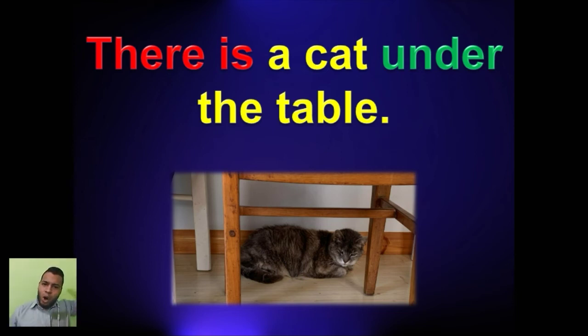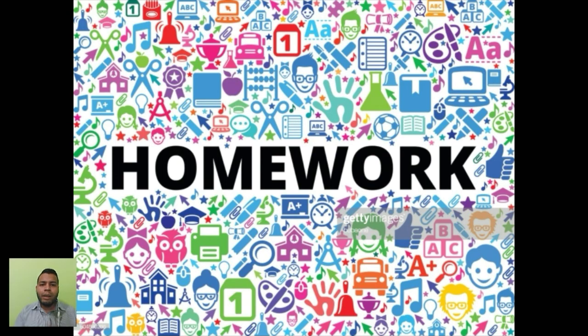There is a cat under the table. Hay un gato bajo la mesa, debajo de la mesa, ok? Utilizo también la preposición de lugar, under. Y utilizo there is, porque me estoy refiriendo solamente a un gato. Si fuesen varios gatos, voy a decir entonces, there are. There are some cats. There are many cats. But in this case, we are talking about only one. There is a cat under the table.